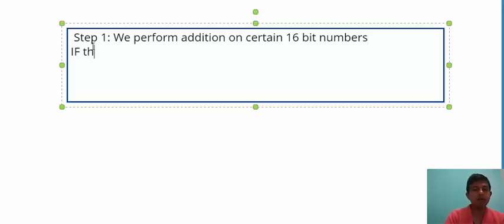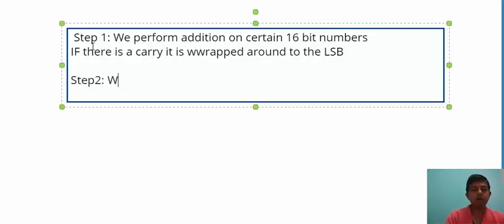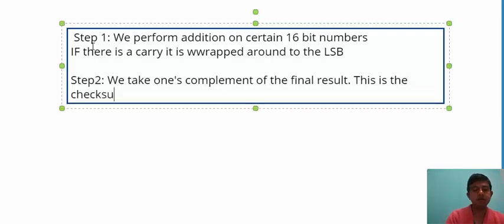If there is a carry, it is wrapped around to the lowest significant bit. This is the first step, and in step 2 we take the one's complement of the final result. This is the checksum.